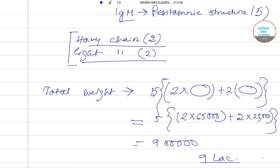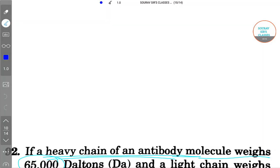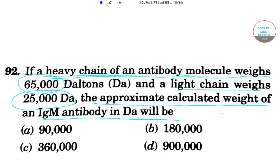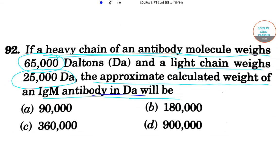We are asked for the IgM antibody in Daltons, and that will be nine lakh. Option D, 900,000, is the correct answer for this particular question.